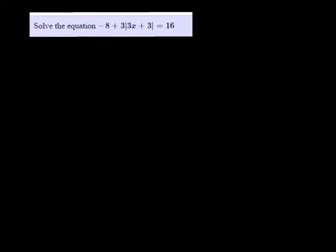Okay, we are solving the equation negative 8 plus 3 times the absolute value of 3x plus 3 equals 16. What you want to do is get the absolute value isolated.